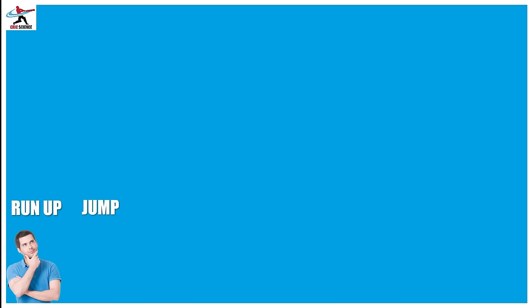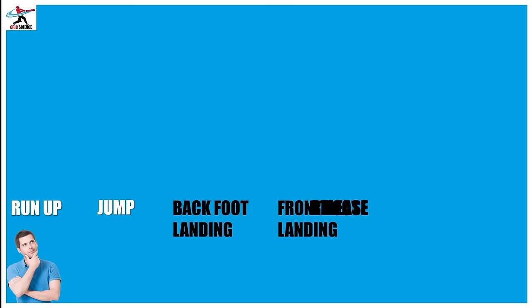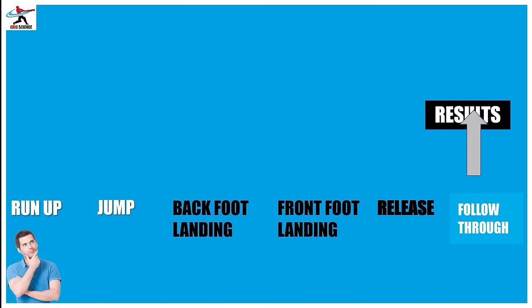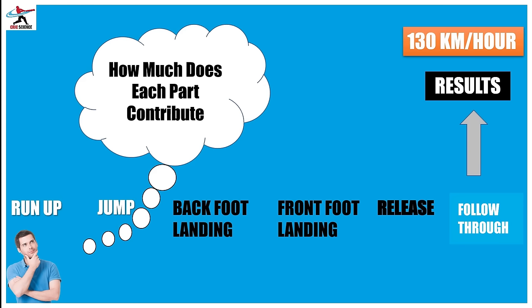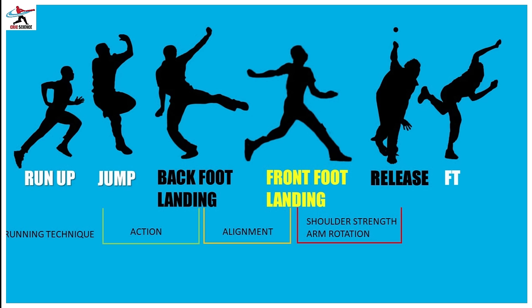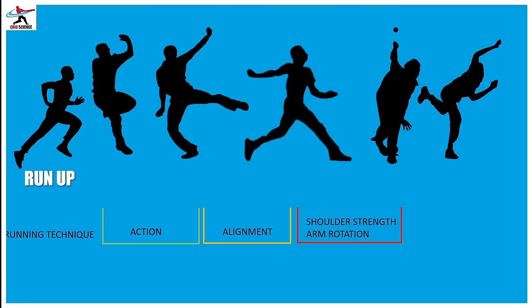मान लीजिए आप 130 km की speed से ball डालते हैं और अपनी speed को और बढ़ाना चाहते हैं. तो आपको यह जानना अत्यंत आवश्यक है कि balling के किस part का आपके total speed में कितना contribution है. Run up means आपका running technique, jump means process for action, back foot landing means action with better alignment, front foot landing to release means shoulder strength and arm rotation, और follow through — यह पिछले सभी parts में की गई movement का result होता है.